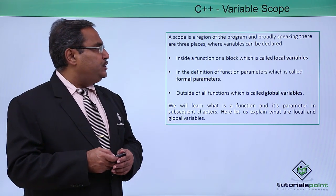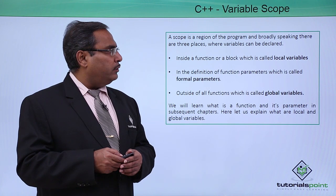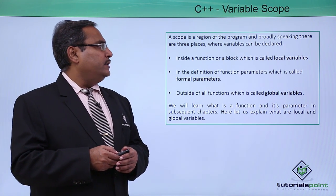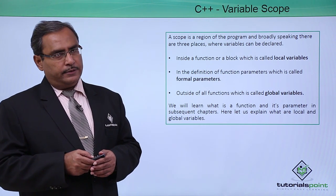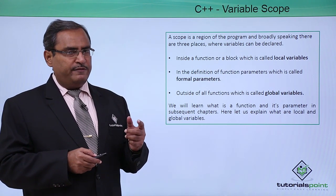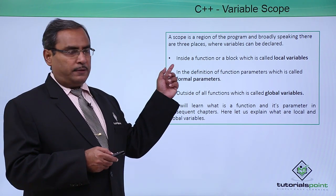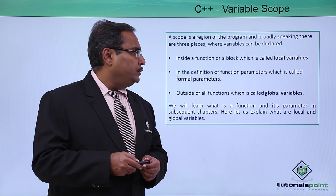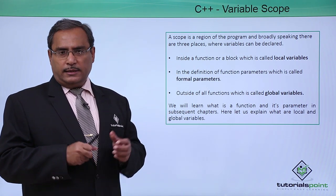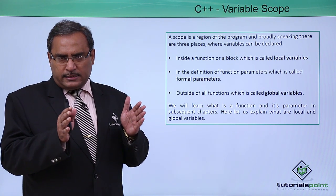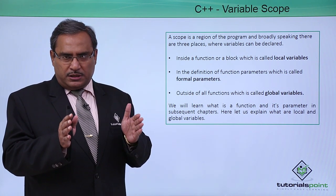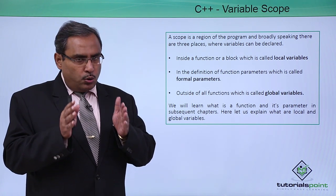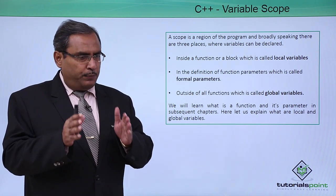A scope is a region of the program, and broadly speaking, there are 3 places where variables can be declared. The first one is inside a function or a block, which is called local variables. That means the variables have been defined in a certain block in a function, so the variable scope will be local within that respective block.